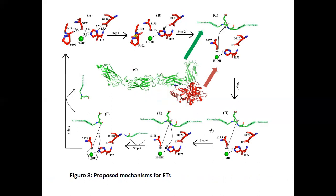Subsequently, the C-terminal of desmoglein-1 detaches from the enzyme while the N-terminal remains attached. Then a water molecule attacks this bond, and the N-terminal part also detaches from the enzyme. In this way, desmoglein-1 is cleaved into two parts, which is the basic function of this enzyme.